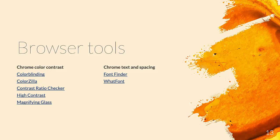Colorzilla is a tool with several features. The one I use it for is when I have a banner photo with text in front of it — I need to get the color contrast from the lightest part of the photo and the text in front of it. I'll take the color picker, get that color from the photo, then go to the WebAIM color contrast tool and look at the color contrast between the photo and the text.